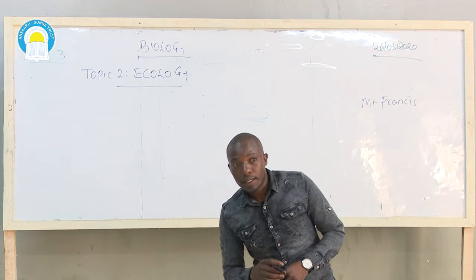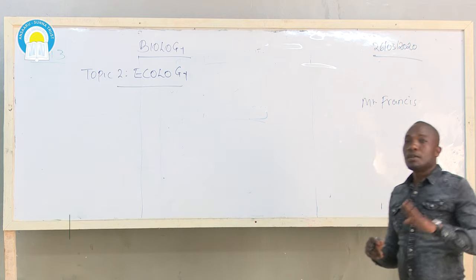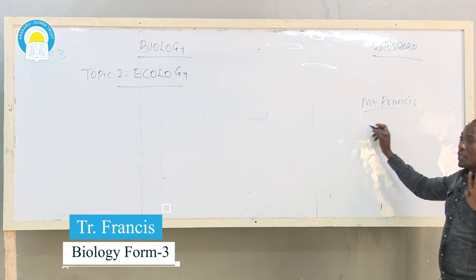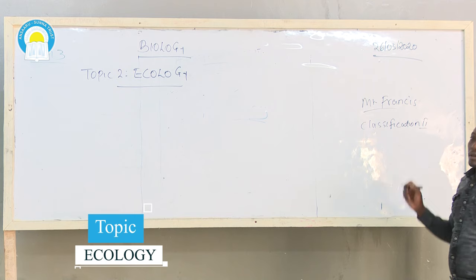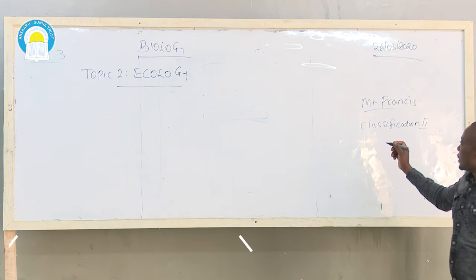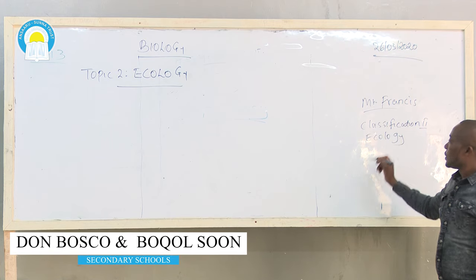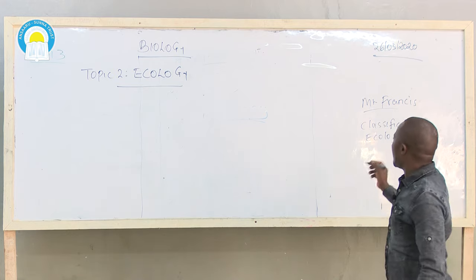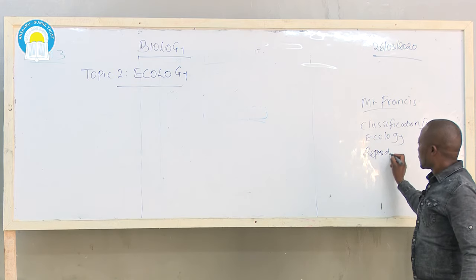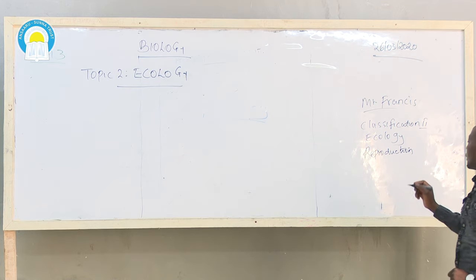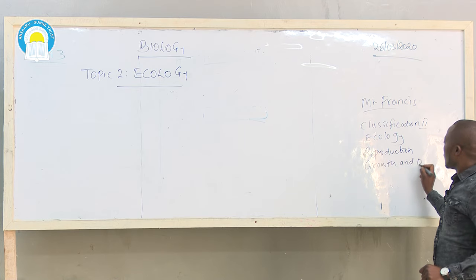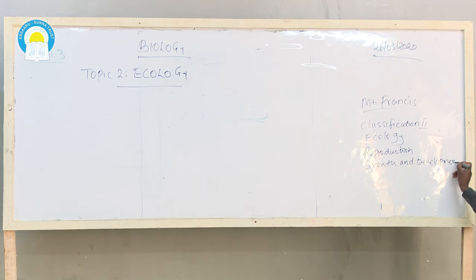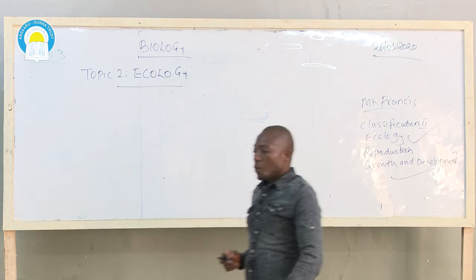I'm going to take you through Form 3 work, Biology. In Form 3, we normally have four topics. The first topic is Classification 2. The second topic is Ecology. The third topic is Reproduction — that is Reproduction in Plants and Animals. Then the fourth topic is Growth and Development. So allow me to take you through the second topic, which is Ecology.